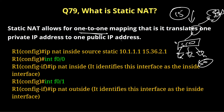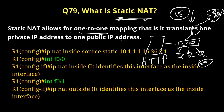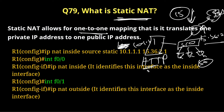We use static NAT when there is one server — for example an HTTP server — and you want to give access to outside users. You will configure static NAT for this server. Suppose the IP address of the server is 10.1.1.1 and the public IP address I am running is 15.36.2.1. Here I will configure a static NAT for this HTTP server, so all outside users will access my HTTP server by the public IP address 15.36.2.1.